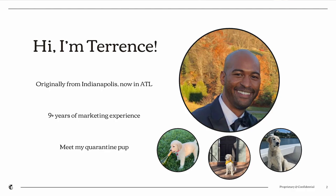Before we get started, I want to introduce myself. I'm Terrence Tucker. Originally from Indianapolis, Indiana, I now live in Atlanta, Georgia. I've been here for a little over 10 years now. When I first moved here, I started working in marketing at an agency in Buckhead. Now I've been with MailChimp for about four and a half years. I also want to introduce my quarantine pup — her name is Nala. She is a golden retriever who just turned one year old, and she hopefully won't be heard in the background today.